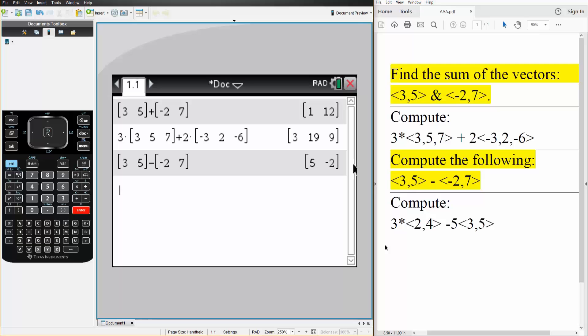Last one. We want to compute this. So 3 times square bracket. We have 2, 4. And it's going to be subtraction. So minus 5 times square bracket. So we have 3, 5. We hit enter. And this is the final answer. And that's how we can compute vector addition and vector subtraction on the TI Inspire.